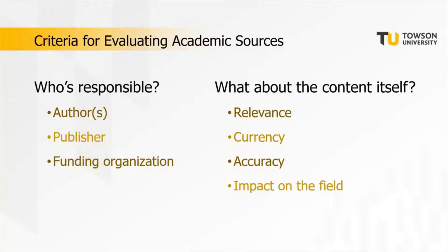Now let's consider the criteria to keep in mind when evaluating academic sources. I like to separate these into two main categories: first, who is responsible for the content, and second, the quality of the information itself. In the first category, consider the author, the publisher, and the funding organization. In the content category, consider relevance, currency, accuracy, and the impact that source had on the field.